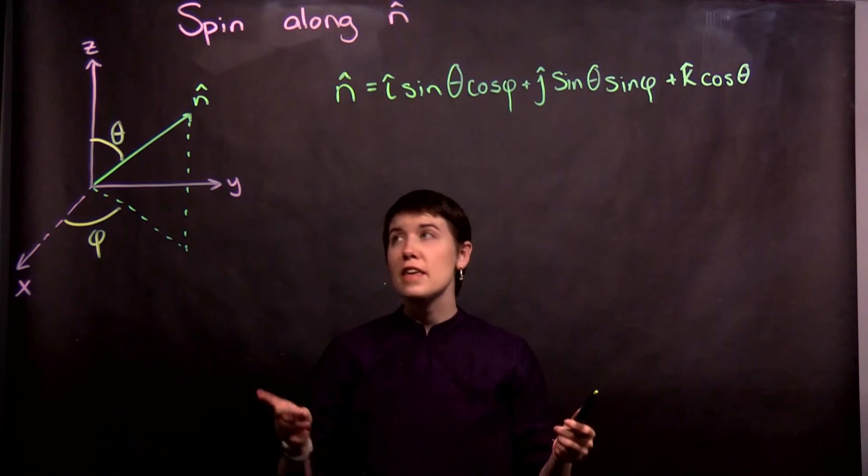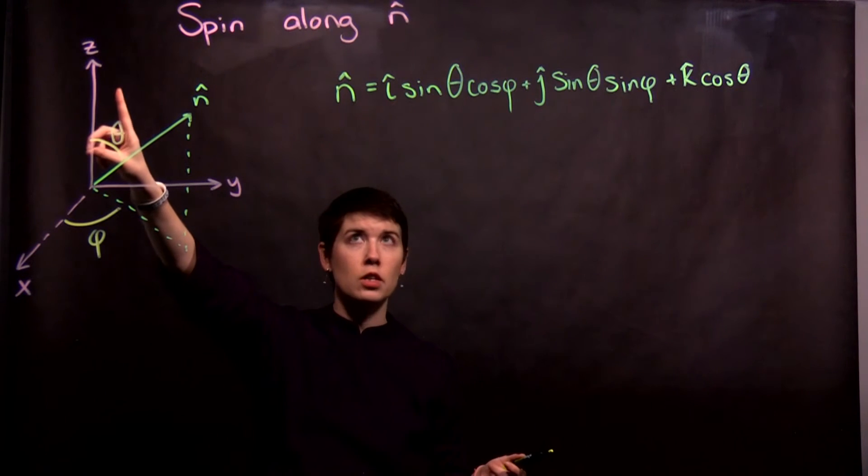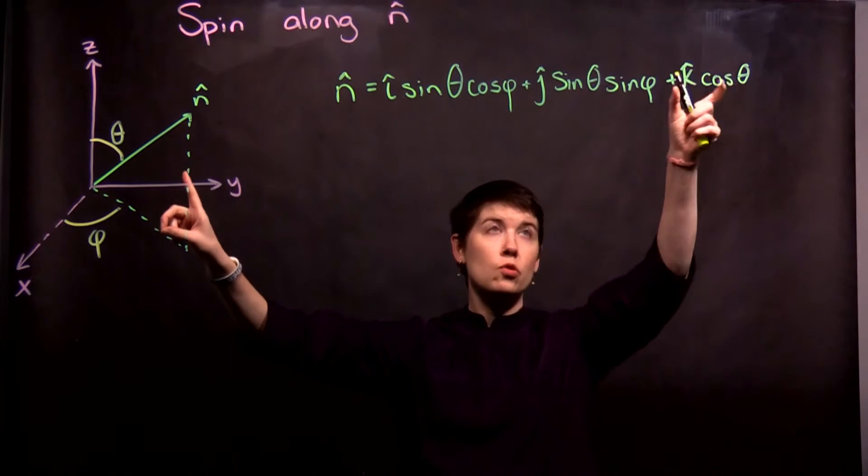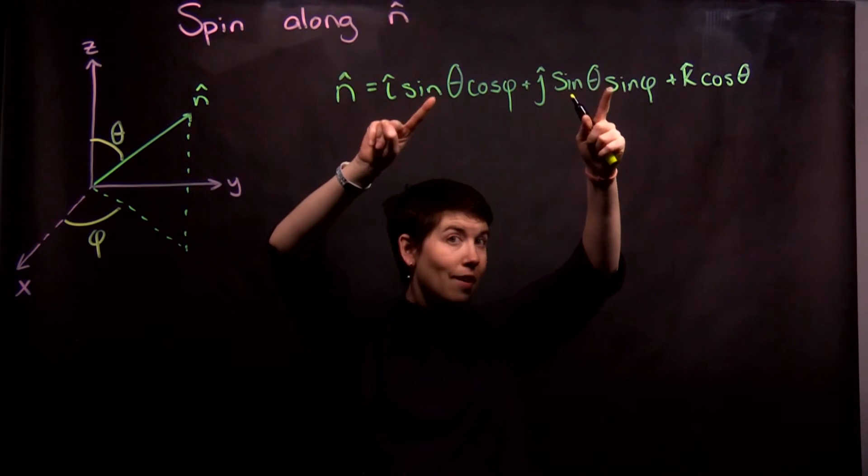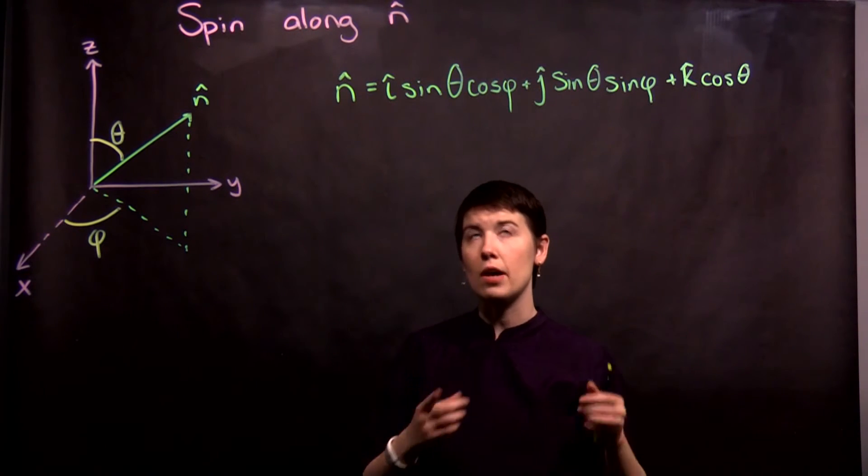So to do a quick check and say, does this make sense? Well, if theta was zero, that would mean that we are straight up in the z direction. And so if theta is zero, cosine of zero is one. So this term is one. We have k hat, so z. Sine theta, sine of zero is zero. These terms drop out. So that checks out.